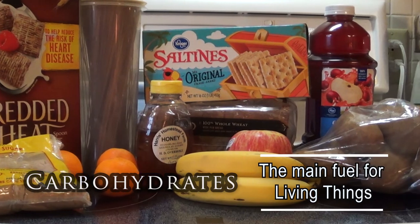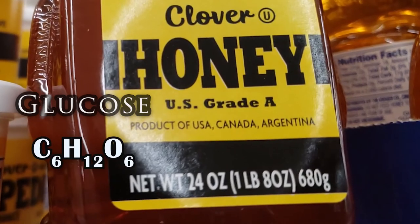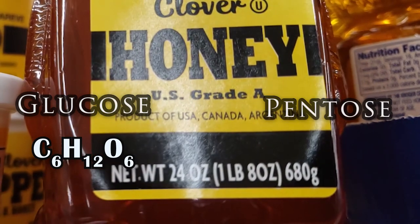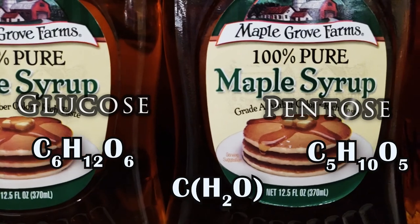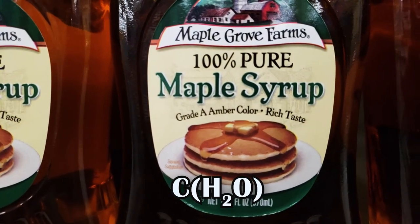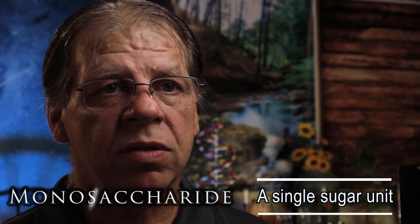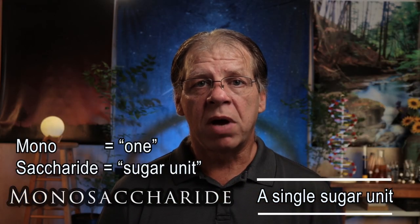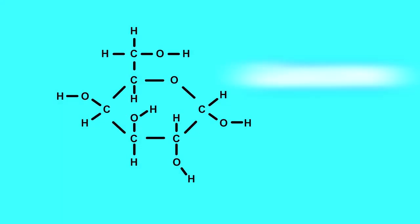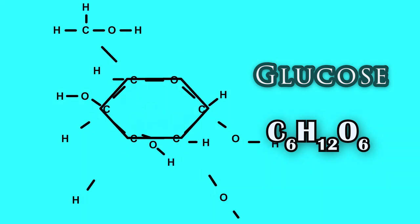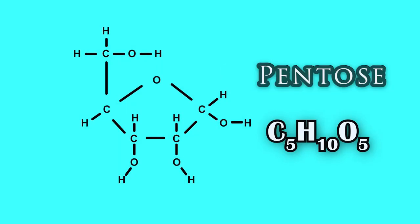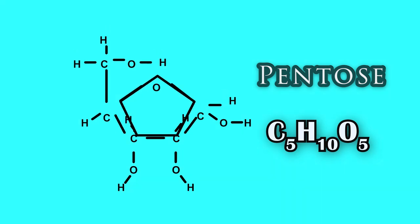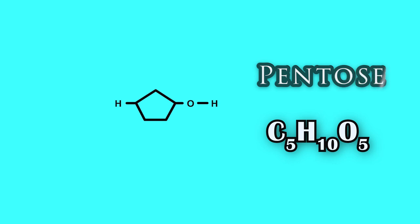Carbohydrates are the main fuel for living things. Glucose is a simple carbohydrate with the formula C6H12O6. Pentose is another simple carbohydrate with the formula C5H10O5. Notice it follows the same basic pattern as glucose — for every one carbon, there are two hydrogens and one oxygen: CH2O. Glucose and pentose are called monosaccharides because they're single sugar units. Mono means one, saccharide means sugar. This is the structural formula for glucose — it forms a ring structure, almost like a hexagon, so we use a hexagon to represent a glucose molecule. Pentose forms a pentagon since it has only five carbons. Notice on one side of the ring there's an H attached, and on the other side there's an OH.